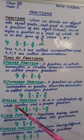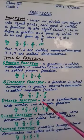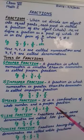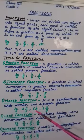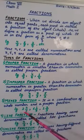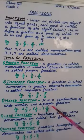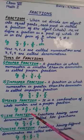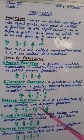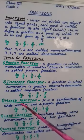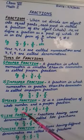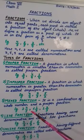Coming to the third one: mixed fraction. A mixed fraction is a combination of a whole number and a proper fraction. Let's see some examples: 2 whole 4 by 5, 6 whole 1 by 7, 1 whole 2 by 3. Here we can see that 2 is a whole number and 4 by 5 is a proper fraction. So a mixed fraction is a combination of a whole number and a proper fraction.